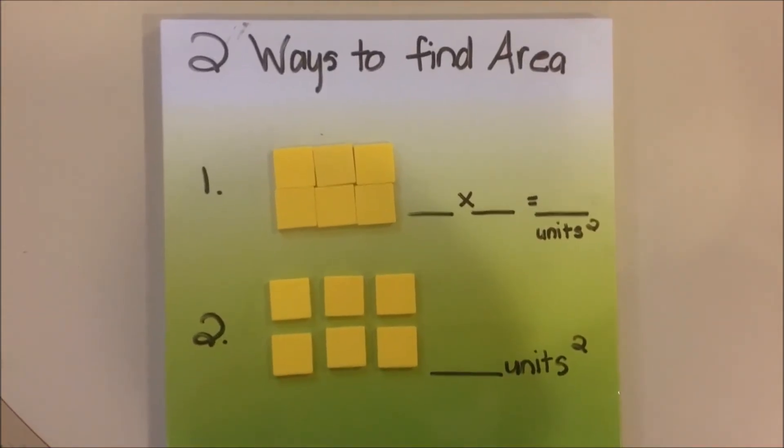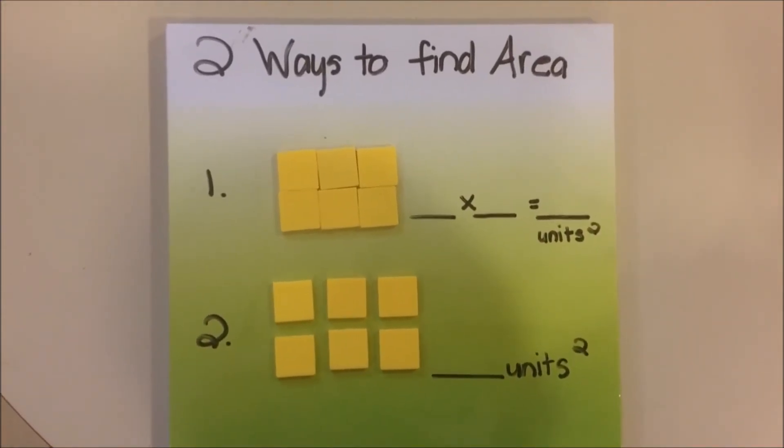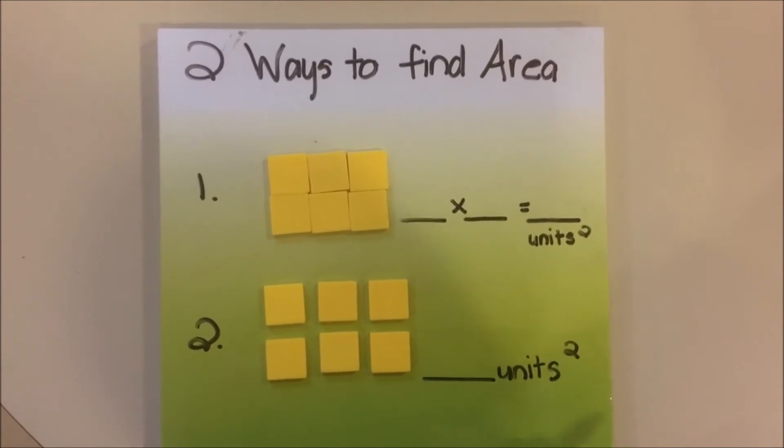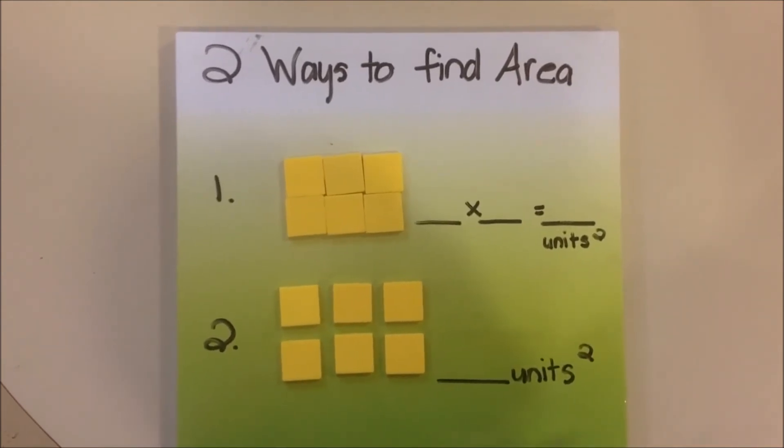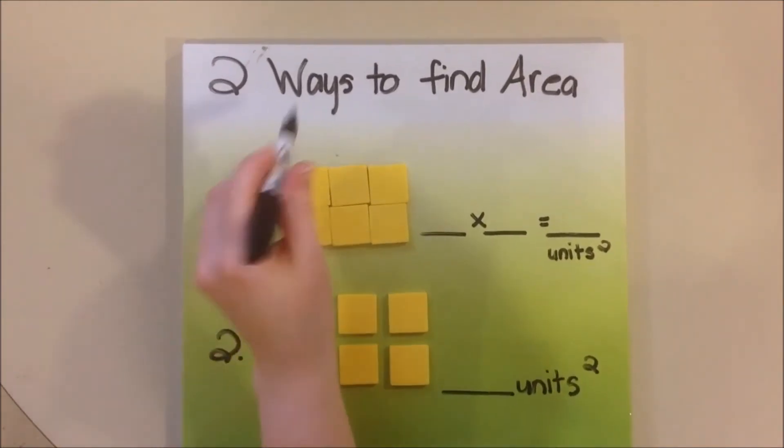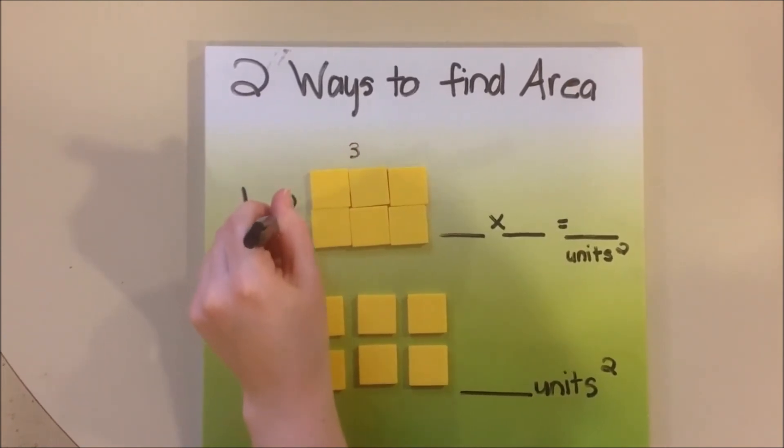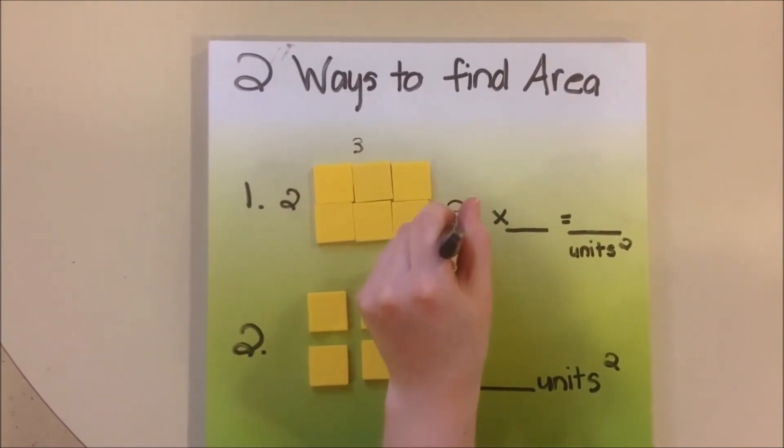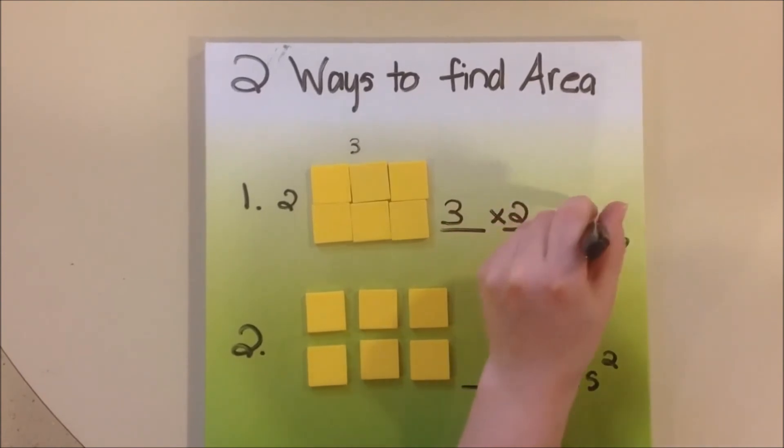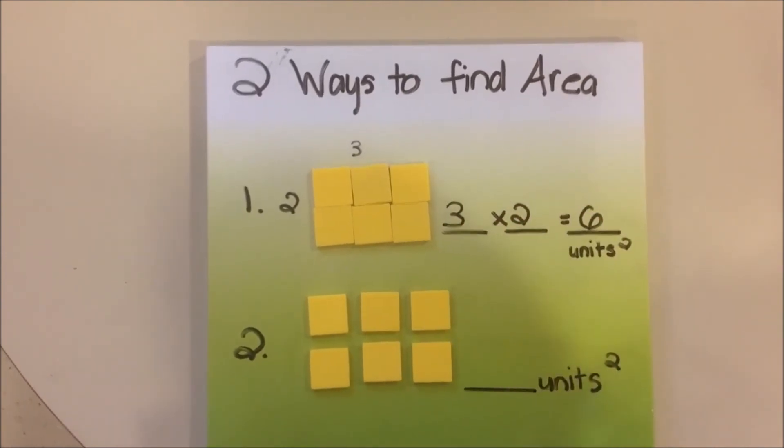So now we know that there are two ways to find the area of a rectangle. One way is to multiply the length times the width of a rectangle. In this rectangle, the length is 3 and the width is 2. So we are going to multiply 3 times 2 to get an area of 6 units squared.